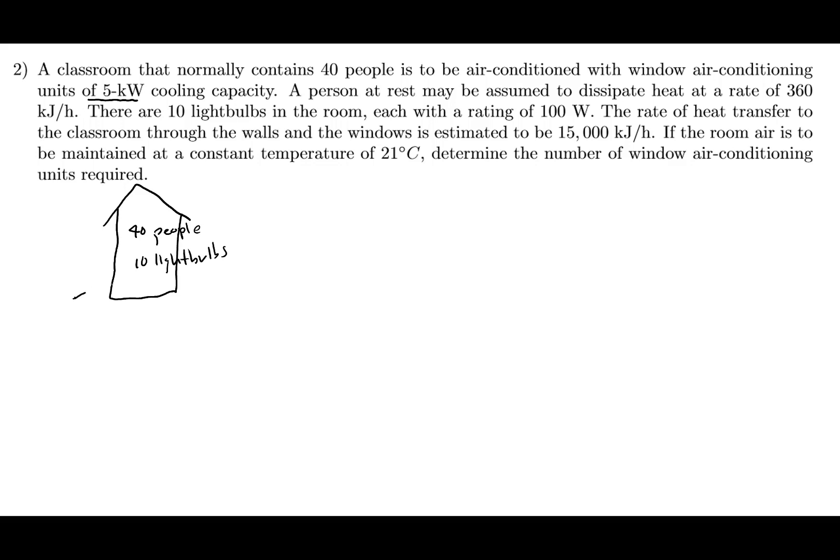We have 15,000 kilojoules per hour of heat being transferred into the room. So Q dot wall is equal to 15,000 kilojoules per hour. What we're going to need to do with this problem is an energy balance. Since we're maintaining a constant temperature...